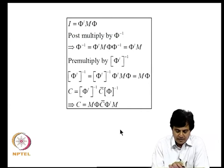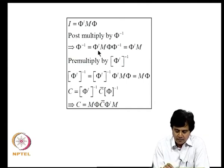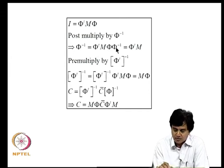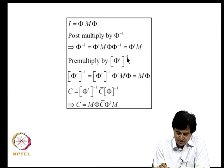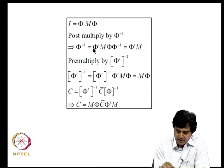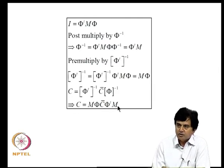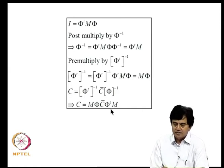A simple way to overcome this uses the orthogonality relation: I = φᵀMφ. Post-multiplying by φ⁻¹ gives φ⁻¹ = φᵀM, and pre-multiplying by (φᵀ)⁻¹ gives (φᵀ)⁻¹ = Mφ. Using these representations, C = (φᵀ)⁻¹ C-bar φ⁻¹ = Mφ · C-bar · φᵀM, allowing us to evaluate the spatial damping matrix without inverting φ or its transpose.